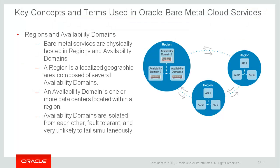First, we'll take a look at regions and availability domains. Oracle Bare Metal Cloud Services are physically hosted in regions and availability domains. A region is a localized geographic area, and an availability domain is one or more data centers located within a region. A region is composed of several availability domains. Availability domains are isolated from each other — they are fault tolerant and very unlikely to fail simultaneously or to be impacted by the failure of another availability domain. When you configure your cloud services, you can use multiple availability domains to ensure high availability and to protect against resource failure. Bare metal resources are either region-specific, such as a virtual cloud network, or availability domain-specific, such as a compute instance.